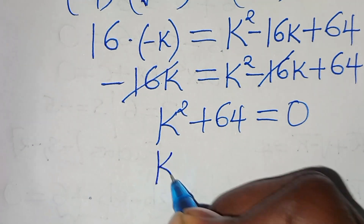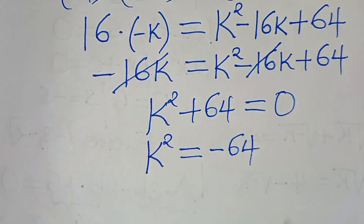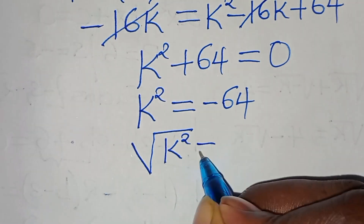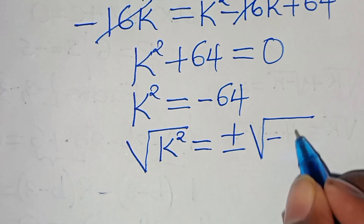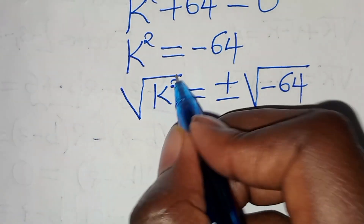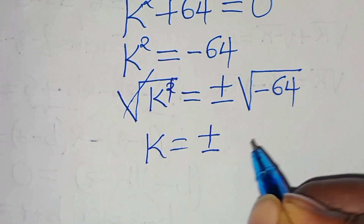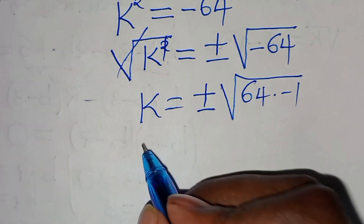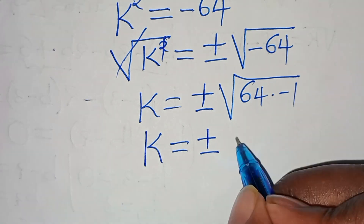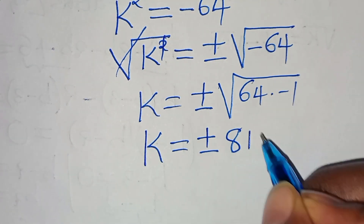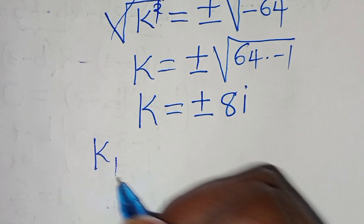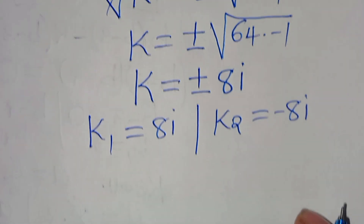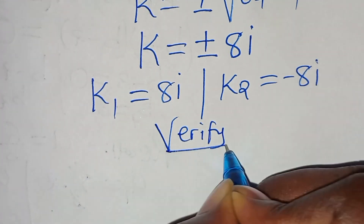This implies k squared equals minus 64. To solve for k, we introduce a square root on both sides: the square root of k squared equals plus or minus the square root of minus 64. We can express the square root of minus 64 as the square root of 64 times minus 1, which introduces i (where i is the square root of minus 1). So k equals plus or minus 8i, giving k1 equals 8i and k2 equals minus 8i.